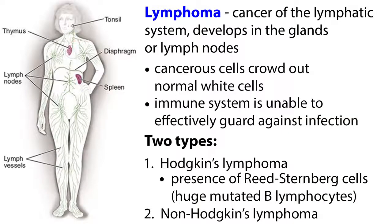Lymphoma is cancer of the lymphatic system and develops in the glands or lymph nodes. There are two types: Hodgkin's lymphoma and non-Hodgkin's lymphoma. The cancerous cells of Hodgkin's lymphoma crowd out normal white cells, and the immune system is unable to effectively guard against infection. The difference between the two types is determined during a biopsy of a lymph node. The presence of Reed-Sternberg cells, which are huge mutated B lymphocytes, distinguishes Hodgkin's lymphoma from non-Hodgkin's lymphoma.